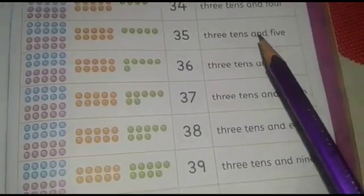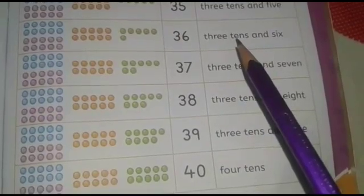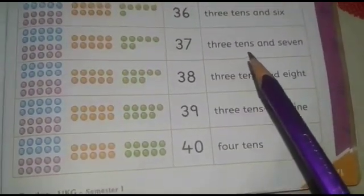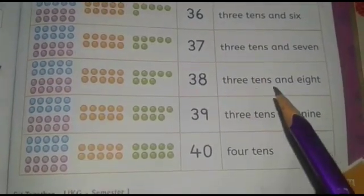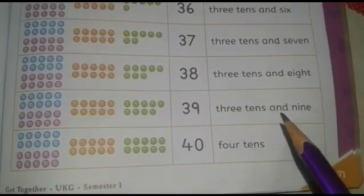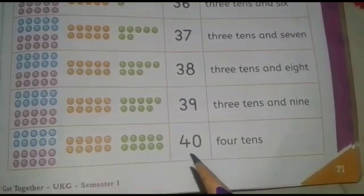3 tens and 5 is 35. 3 tens and 6 is 36. 3 tens and 7 is 37. 3 tens and 8 is 38. 3 tens and 9 is 39. 4 tens is 40.